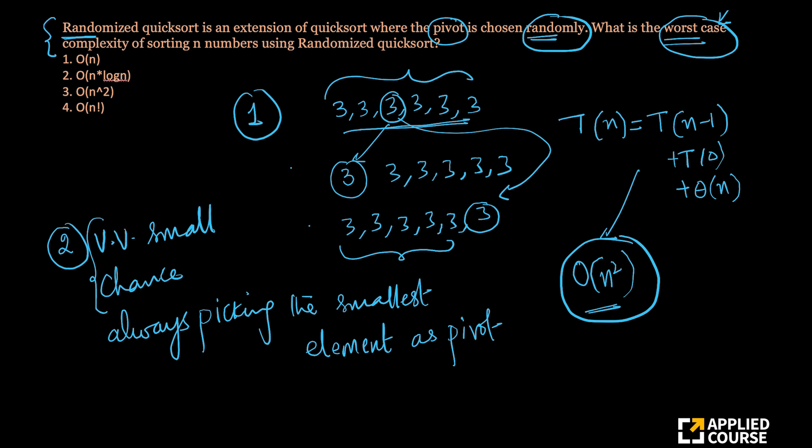In the worst case, you always say, what is the worst case, since there is at least some non-zero probability of picking the smallest element as pivot every time, we will have to account for that in the worst case. So the answer for this will be order of n square.